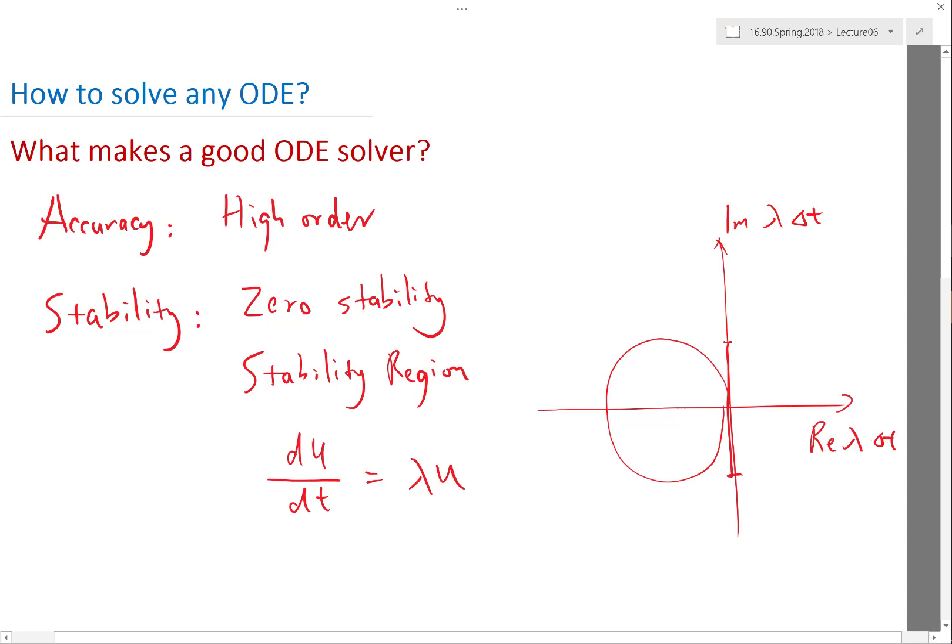That's the standard way to write the stability region of a scheme. But you can also write it as a space of real and imaginary parts of lambda itself, in which the stability region actually shrinks and expands depending on your delta t. If you make delta t small enough, the stability region will be huge. If your delta t is relatively large, your stability region is going to shrink.